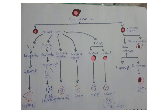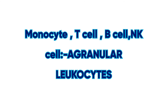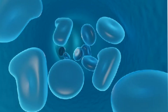The lymphoid stem cell gives rise to NK lymphoblast and small lymphocytes, which include T lymphocytes and B lymphocytes, originated from T lymphoblast and B lymphoblast respectively. B lymphocytes further give rise to plasma cells. Eosinophils, basophils, and neutrophils are granular leukocytes (WBCs). Monocytes, T lymphocytes, B lymphocytes, and NK cells are all agranular leukocytes. These formed cells circulate in the blood and carry out their functions.